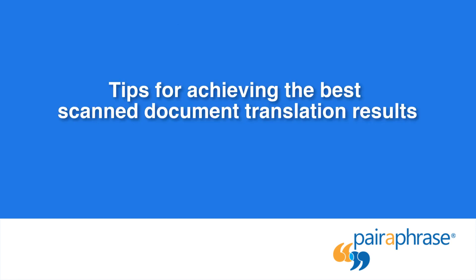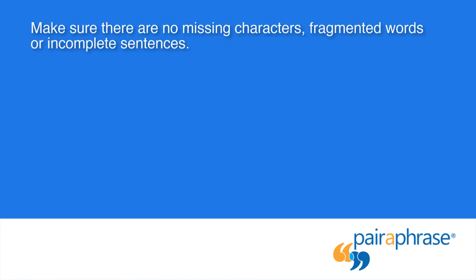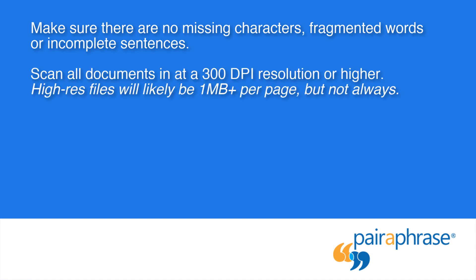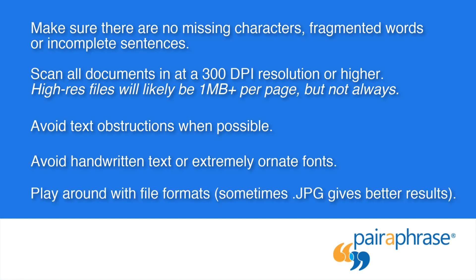Here are some tips for getting the best scanned document translation results with Paraphrase. Make sure there are no missing characters, fragmented words, or incomplete sentences. Scan all documents at 300 dpi or higher. High-res files will likely be more than 1 megabyte per page, but not always. Avoid text obstructions when possible. Avoid handwritten text or extremely ornate fonts. Play around with file formats — sometimes when you convert a PDF to JPEG, you get better results. You might translate the PDF and not be satisfied with it, and then translate a JPEG and get better results.